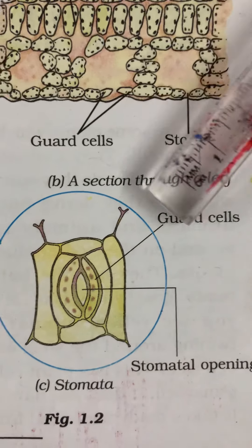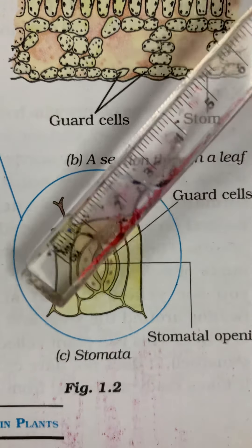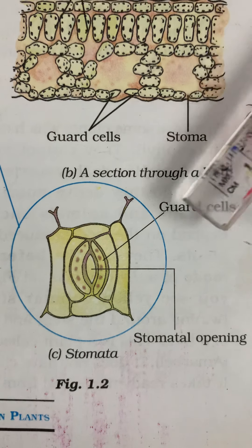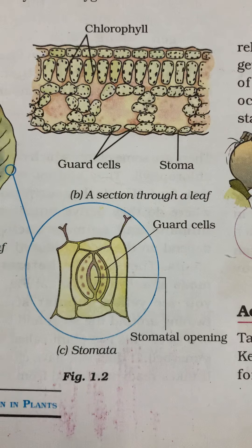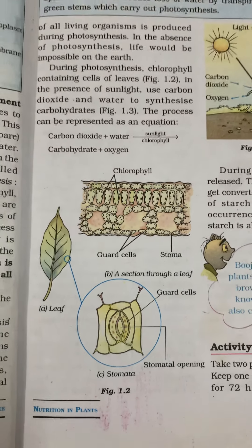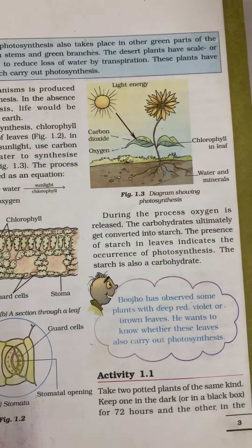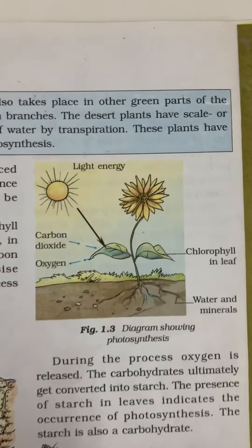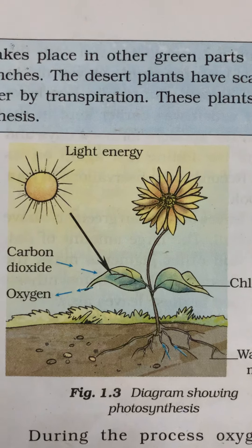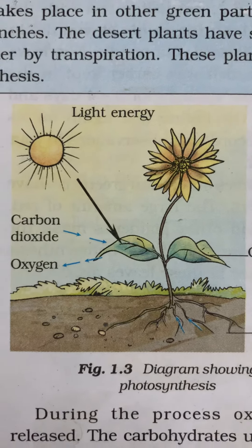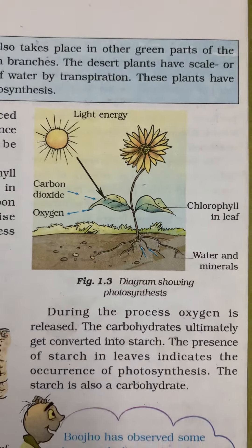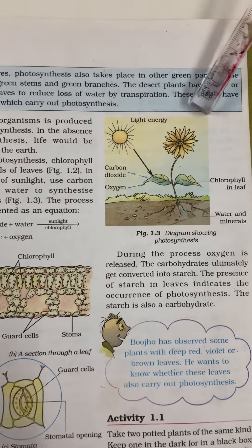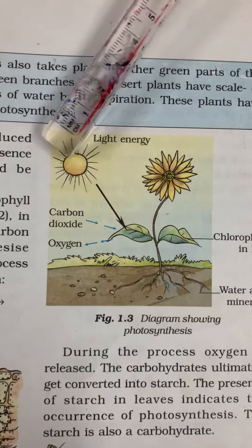Carbon dioxide from the air is taken through tiny pores on the green leaves. These pores are guided by the guard cells, which regulate the opening of the pores. The chlorophyll present captures the energy of sunlight and uses it in synthesizing and preparing the food.